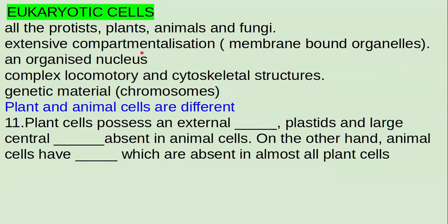In eukaryotic cells, we already have seen extensive compartmentalization, meaning there were membrane-bound organelles. Whether it is the lysosomes, the chloroplasts, or the mitochondria, or the endoplasmic reticulum — these are all membrane-bound organelles.